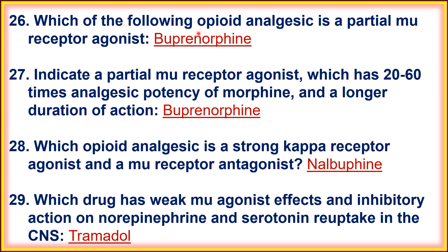Twenty-sixth, which opioid analgesic is a partial mu receptor agonist? That is buprenorphine. Buprenorphine is the partial mu receptor agonist which has 20 to 60 times the analgesic potency of morphine and a longer duration of action.